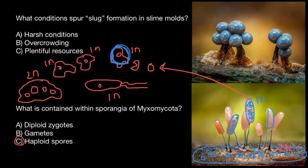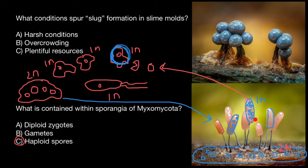The feeding plasmodium can grow very large until it meets harsh conditions again. This would trigger formation of propagation organs in the form of sporangia, where through the process of meiosis, haploid spores would be produced. And the rest of the cycle you already know.